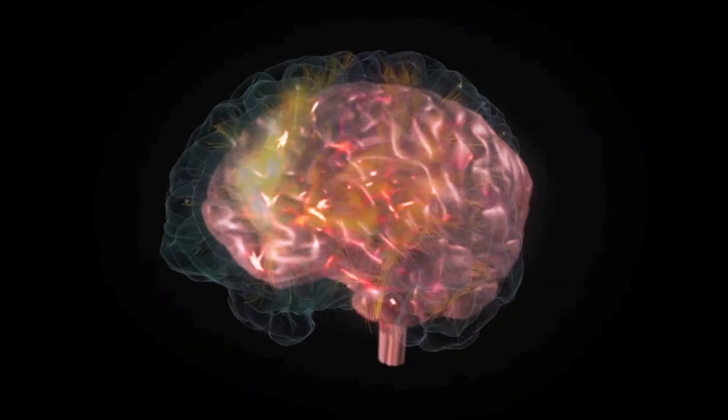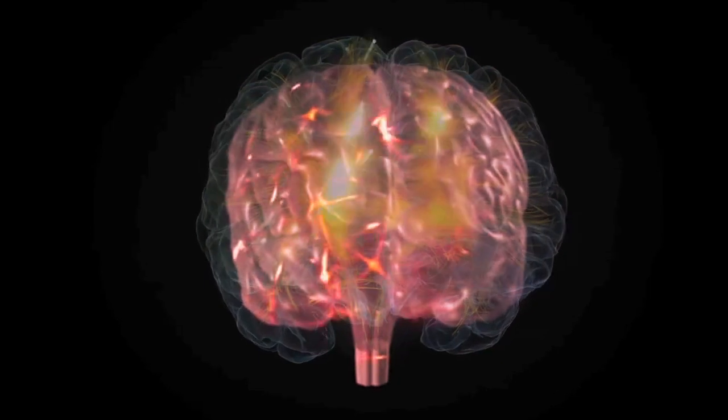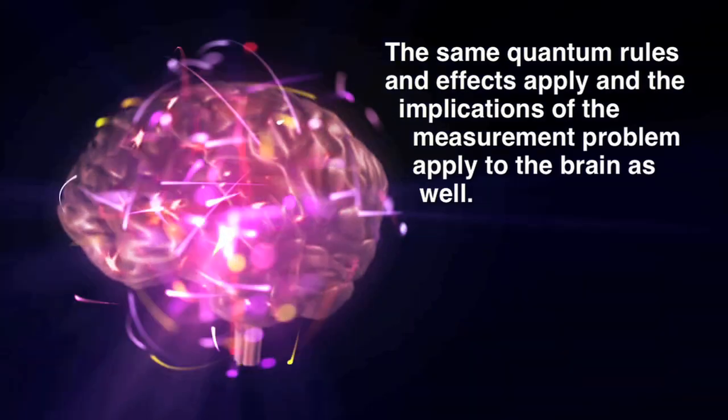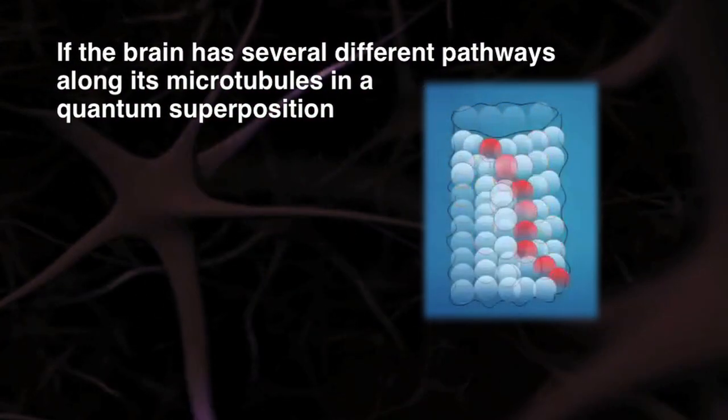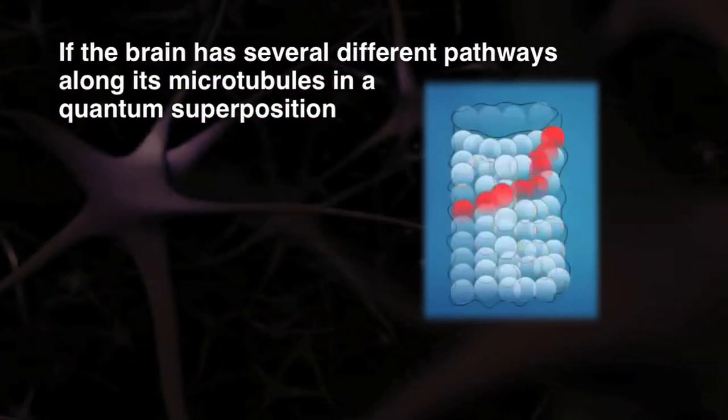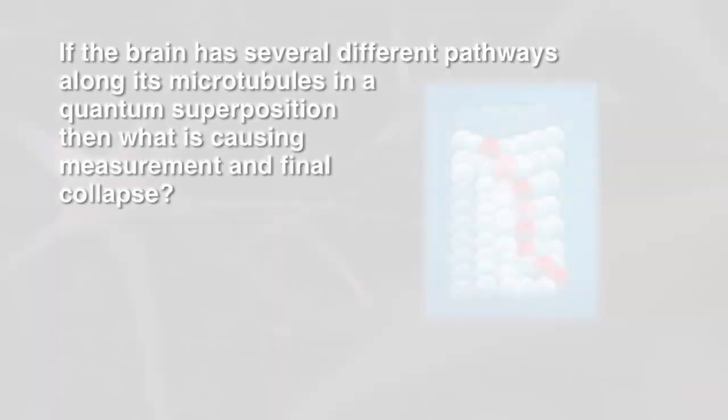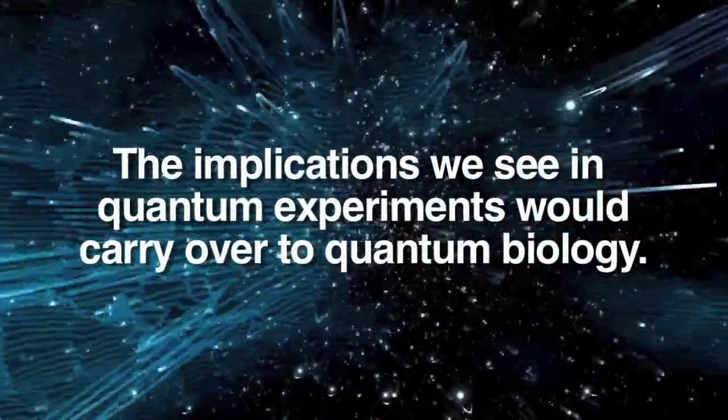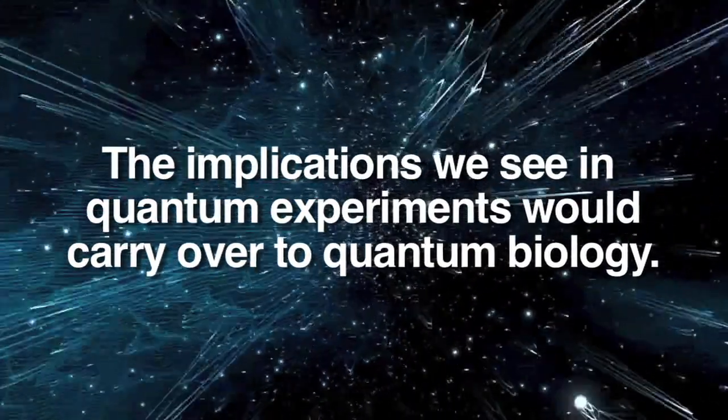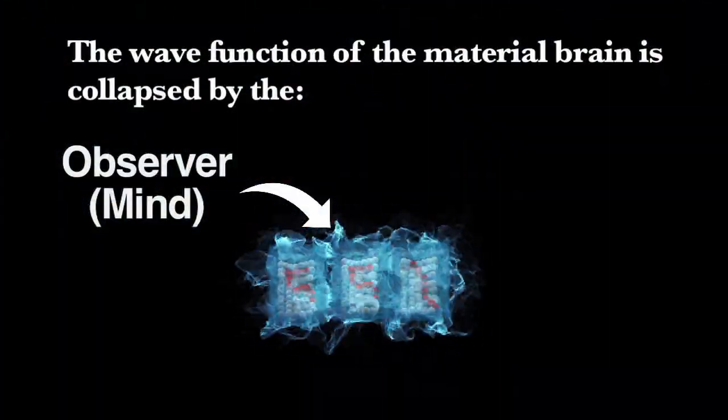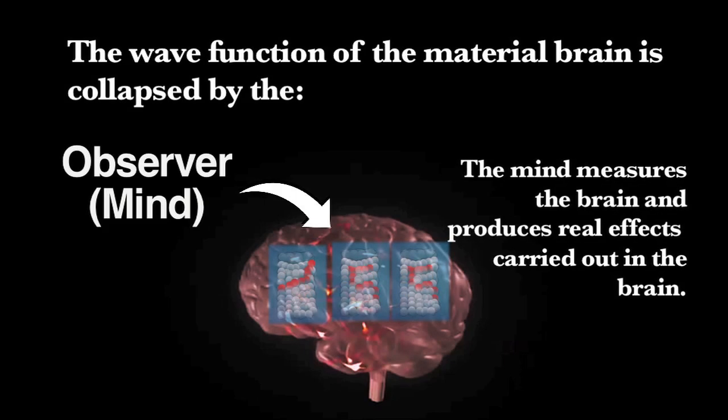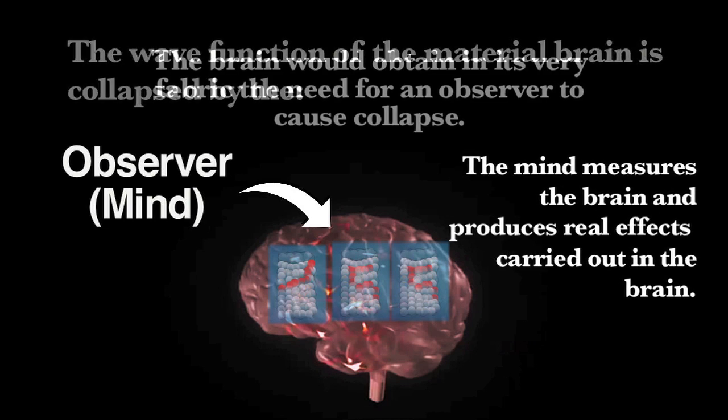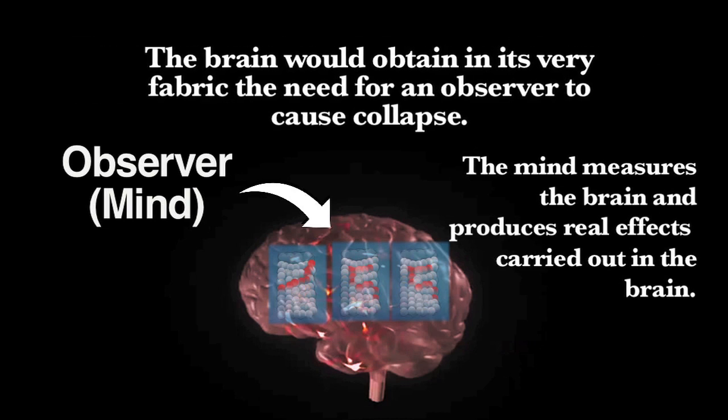What does this have to do with the evidence for the mind not being created by the brain? If the brain emerges from quantum computing, the same quantum rules and effects apply, and the implications of the measurement problem apply to the brain as well. If the brain has several different pathways in a quantum superposition, then we must ask what is causing measurement and final collapse? The wave function of the material brain is collapsed by the mind, or the observer. The mind measures the brain and produces real effects carried out in the brain.